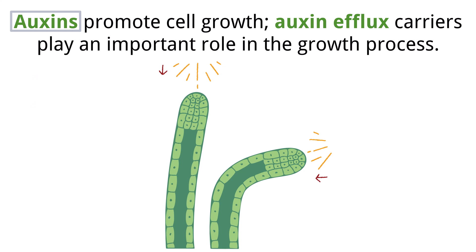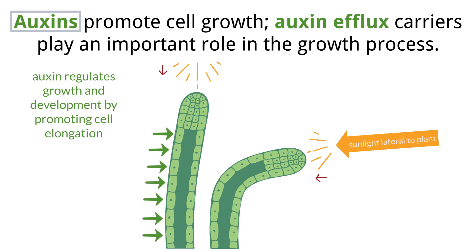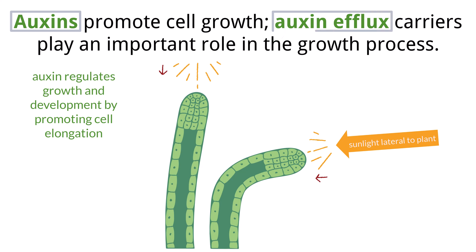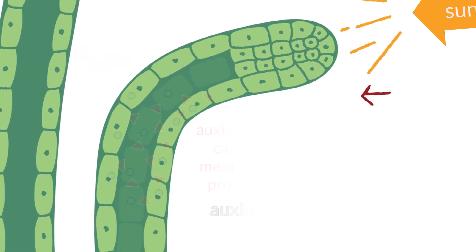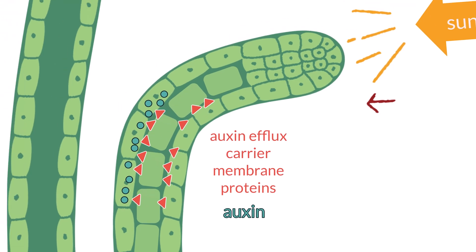Auxin is a key plant hormone that regulates growth and development by promoting cell elongation. The cells in a plant coordinate to get high concentrations of auxin in areas where it is needed. If sunlight is lateral to the plant, then the side away from the light will need to grow faster to help bend the plant toward the light. Auxin efflux carriers play an important role in this process — they are transmembrane proteins that pump auxin into cells. The efflux carriers can move around within the cell membrane, and cells can coordinate to move the auxin efflux carriers to one side of the plant, establishing a high concentration of auxin in that region.